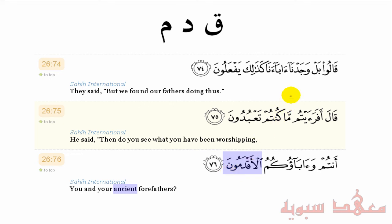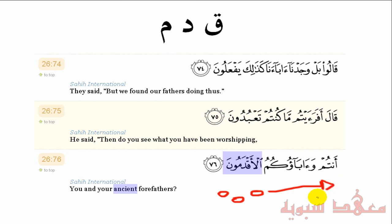If you look at the context, what do these people say? They say: qalu bal wajadna aba'ana kadhalika yaf'aloon — 'They said: but we found our fathers doing this.' What they were doing was worshipping idols, and they justified it by saying 'we found our fathers doing this.' What is interesting is that these people were following in those footsteps of their forefathers. It is as if the aba' al-aqdamoon were the first ones to take the step, and then the next generation, and the next generation, until it got to them. You see how beautifully this word is used in context.